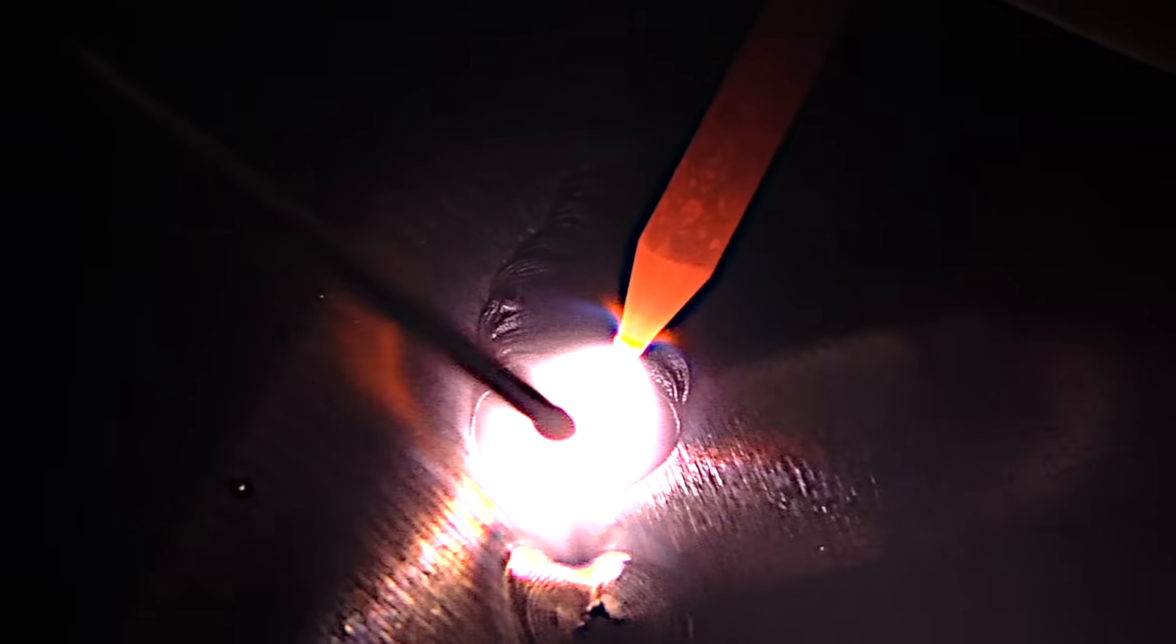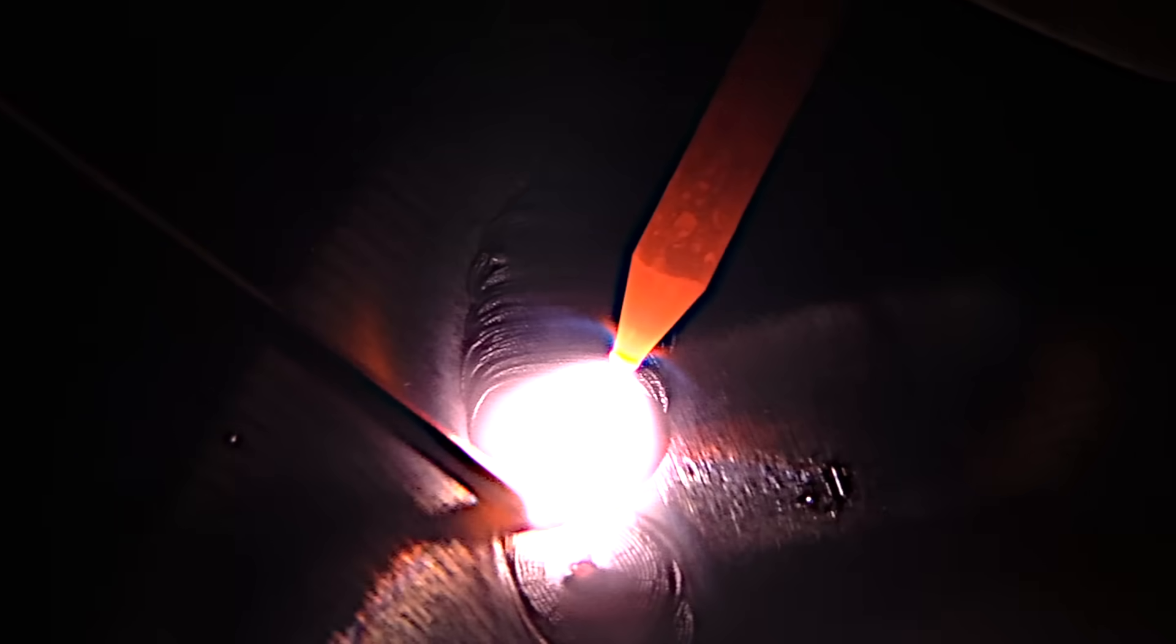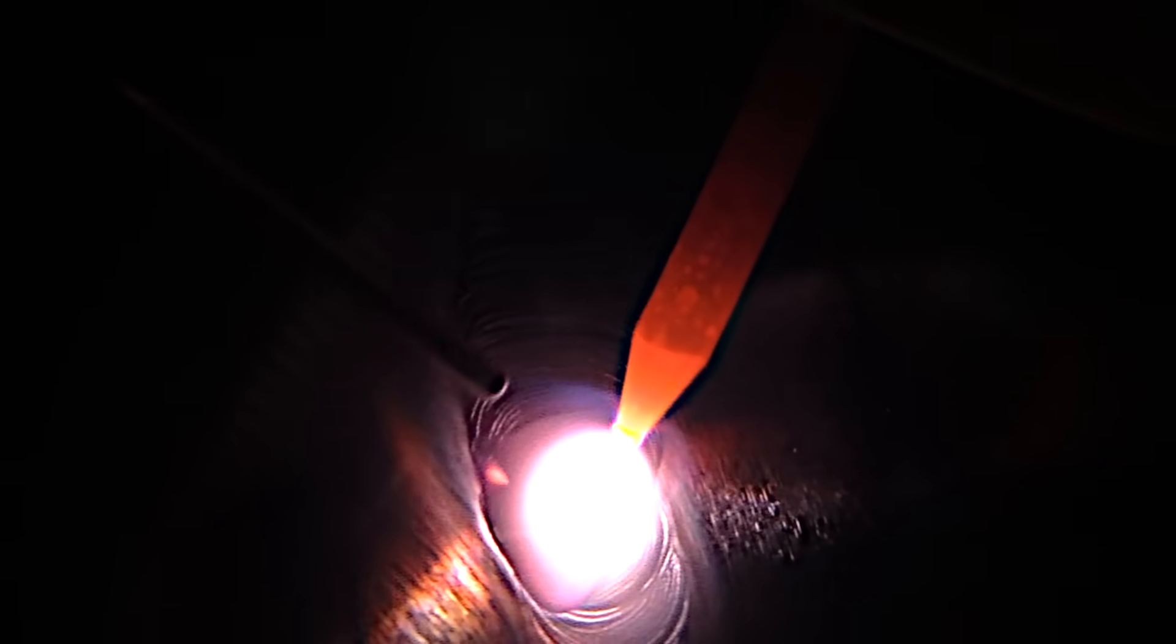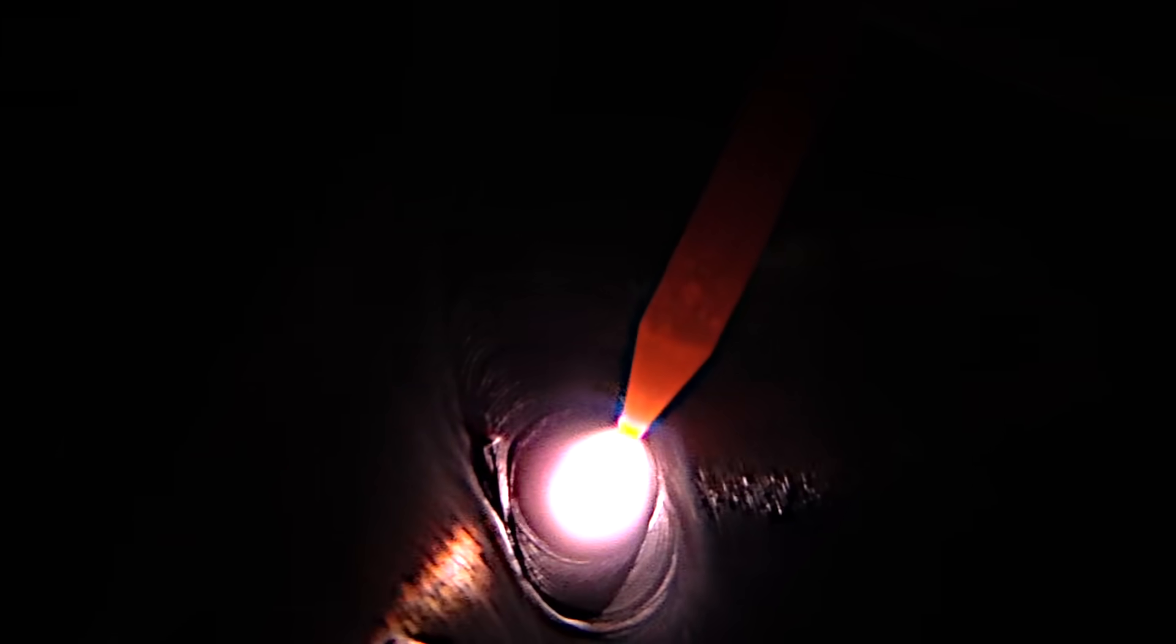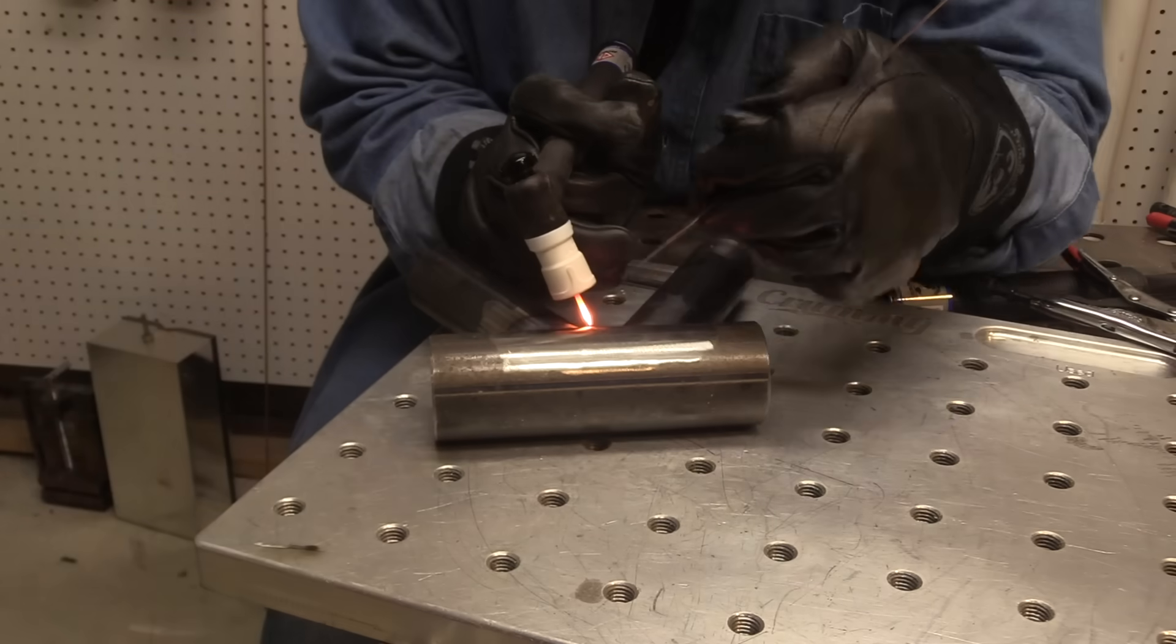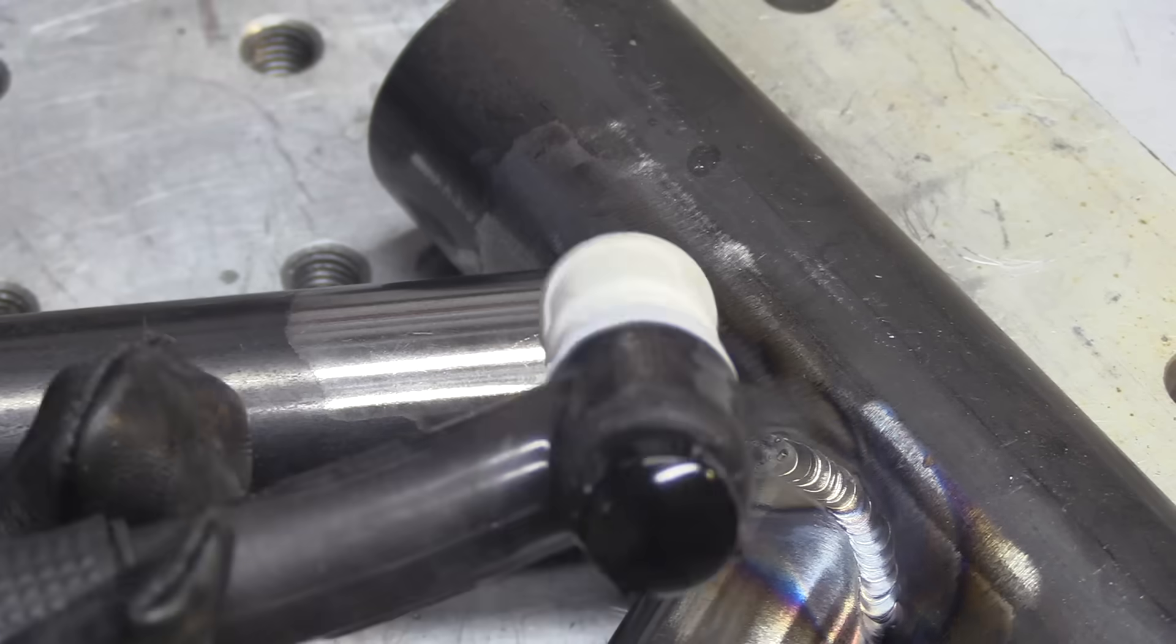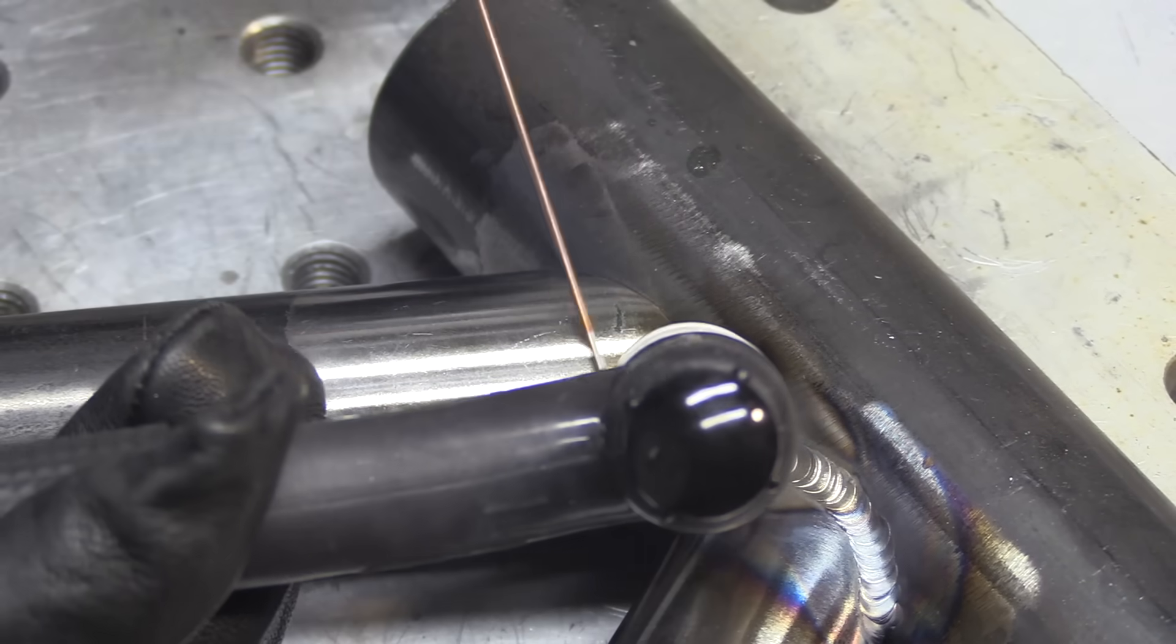I'm using a 3/32 electrode, two percent lanthanated electrode. I pretty much use two percent lanthanated for everything, both AC and DC—just keeps my life simple. There are plenty of other choices that work good, but I've found this is a really good all-around one for what I do.